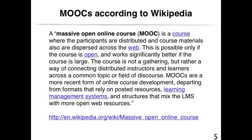According to Wikipedia, a Massive Open Online Course is a course where the participants are distributed and course materials are also dispersed across the web. This is possible only if the course is open and works significantly better if the course is large. The course is not a gathering, but rather a way of connecting distributed instructors and learners across a common topic or field. MOOCs are a more recent form of online course development, departing from formats that rely on posted resources, learning management systems, and structures that mix the LMS with more open web resources. You can access this information by searching for Massive Open Online Course on Wikipedia.